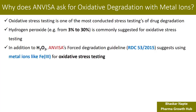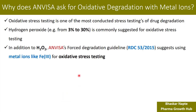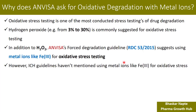In addition to hydrogen peroxide, ANVISA's forced degradation guideline — which is RDC 53/2015, launched in 2015 — suggests using metal ions like iron 3 for oxidative stress testing. However, the ICH guidelines, USFDA guideline, and EMA's guideline have not mentioned using metal ions like iron 3 for oxidative stress testing. It is only mentioned by ANVISA's forced degradation guideline, not by ICH, not by USFDA, and not even by EMA.